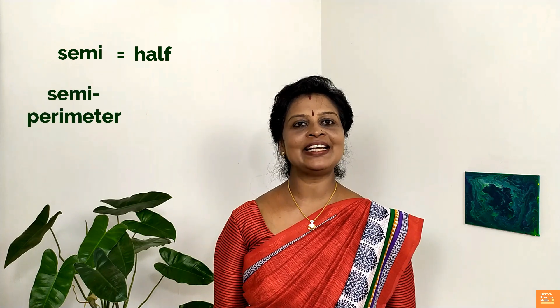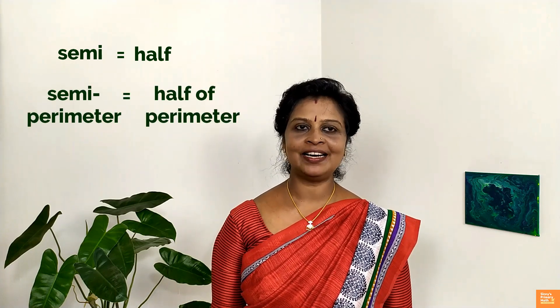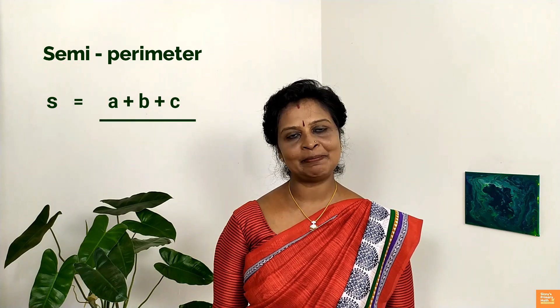Easy to remember: semi means half, semi-perimeter that is half of the perimeter. It is normally denoted by the letter S in lowercase and is expressed as S equals A plus B plus C divided by 2.